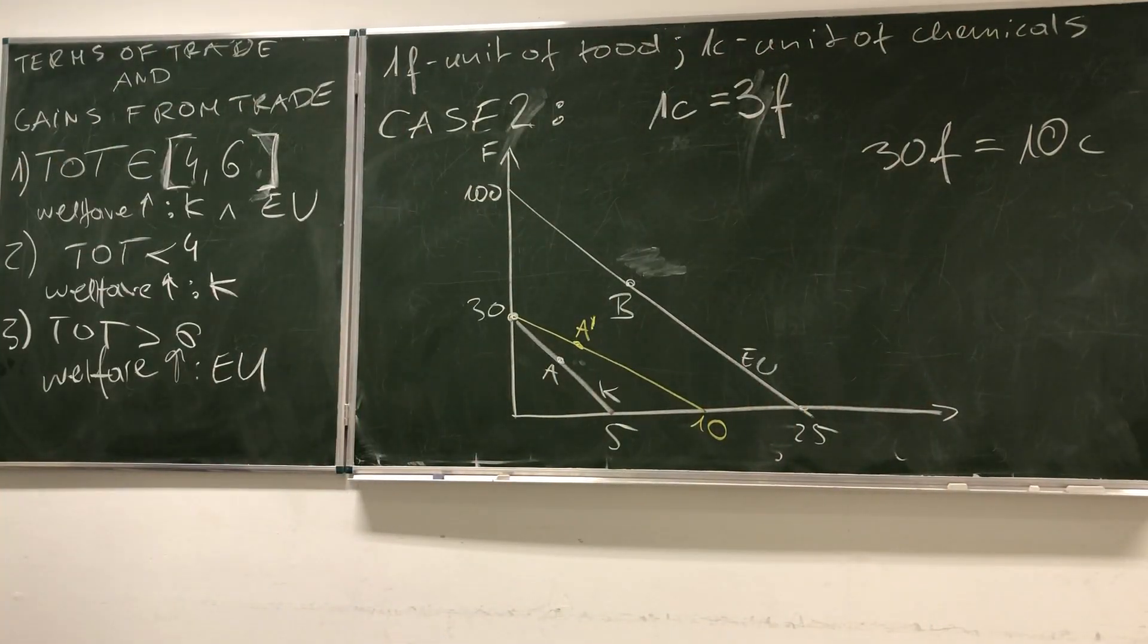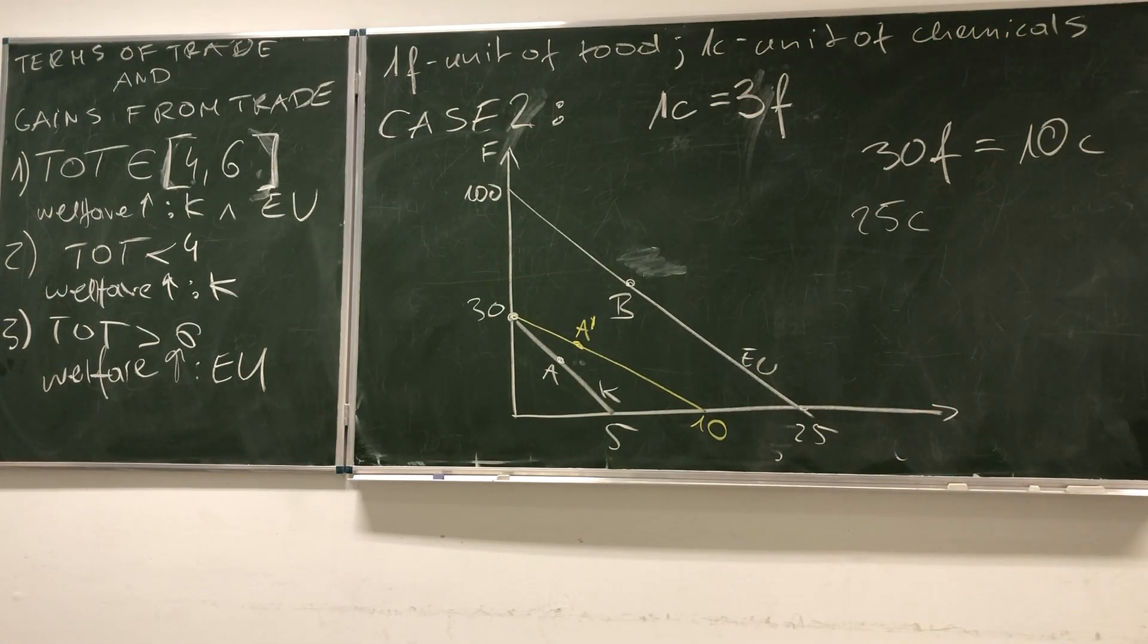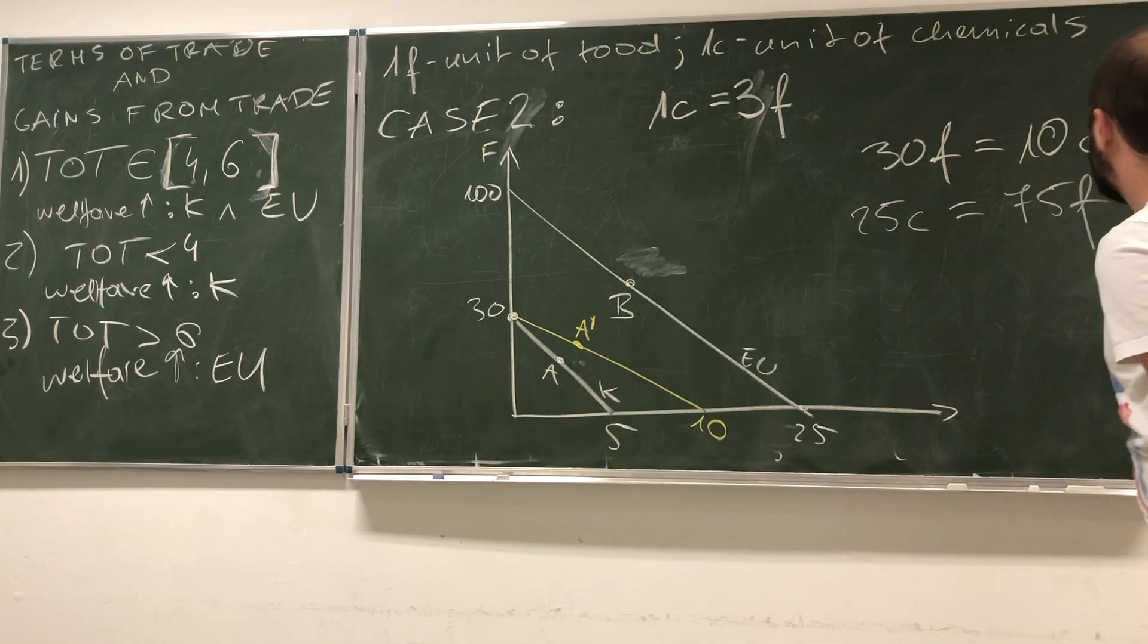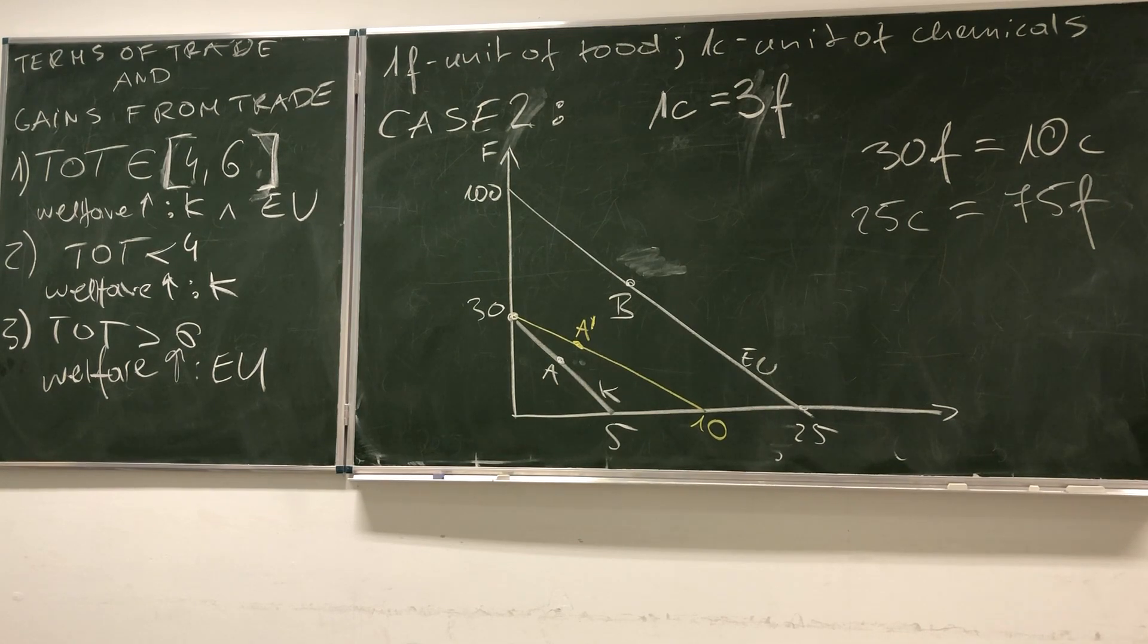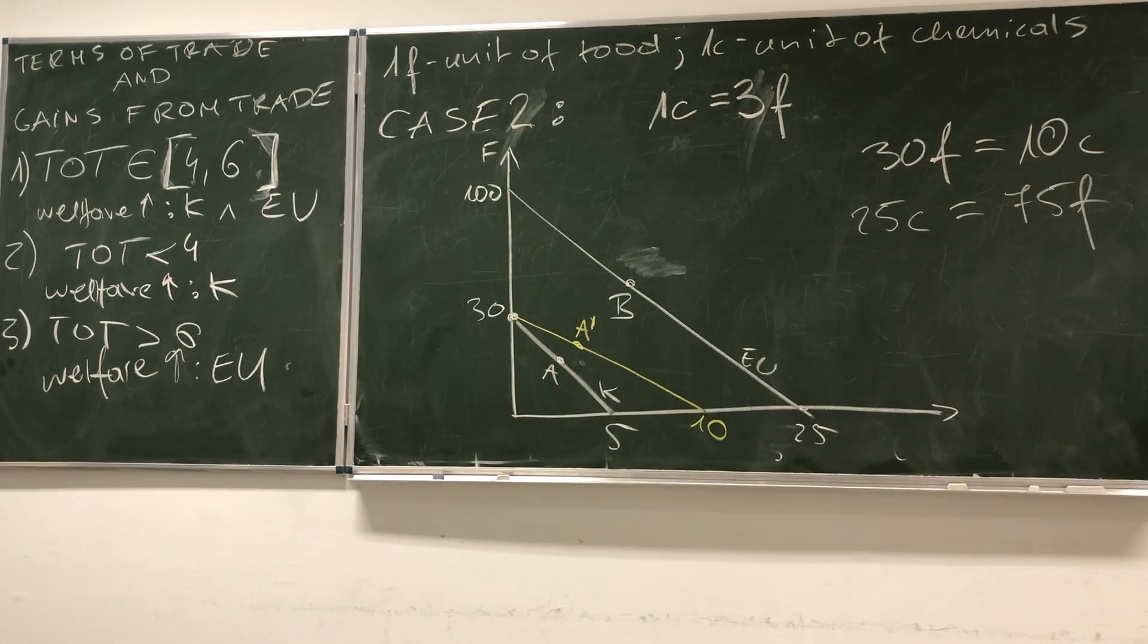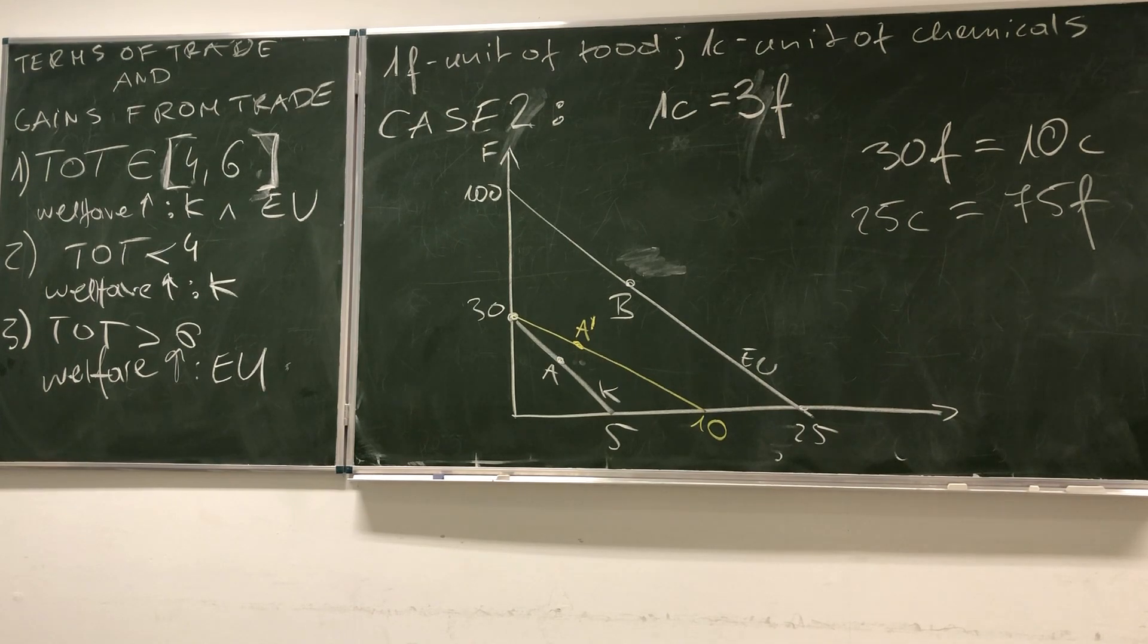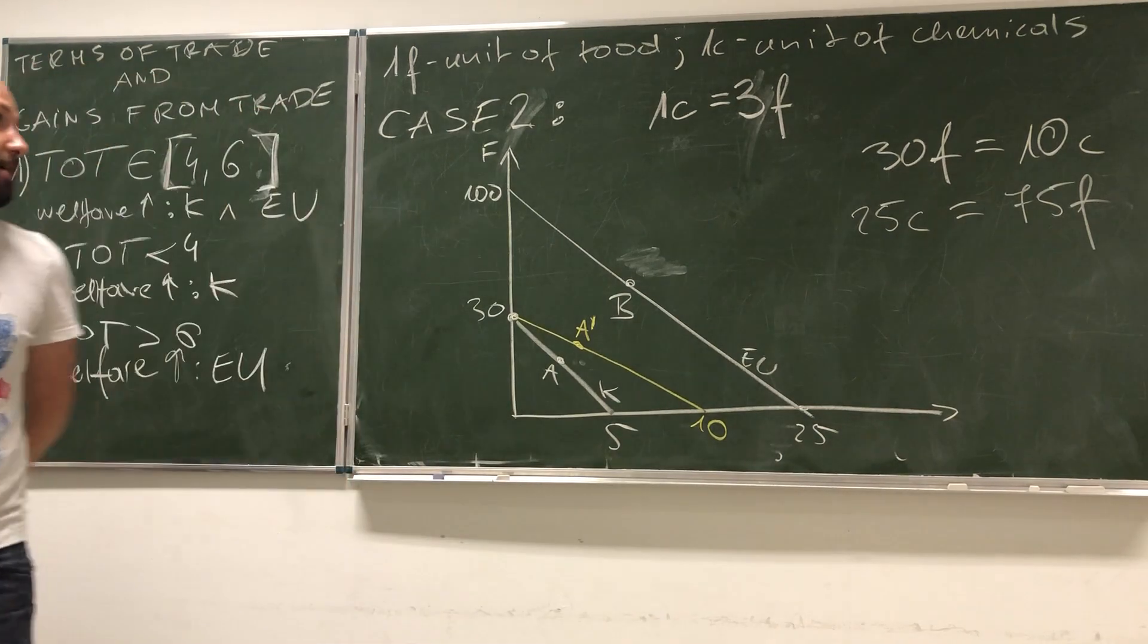This point facilitates better consumption opportunities than the one line below. Now what happens in the European Union? Here the situation is less positive. Because European Union can still produce 25 chemicals, but it can exchange them only for 75 units of food. In this situation, the beneficiary of international trade is only Kenya.